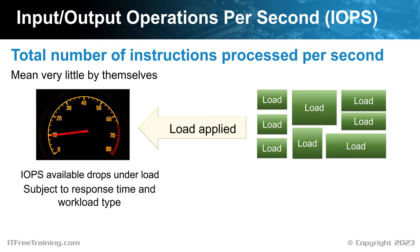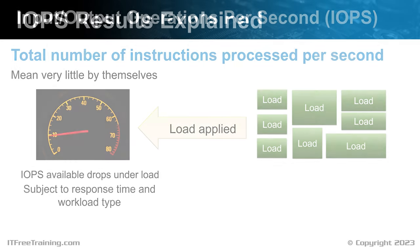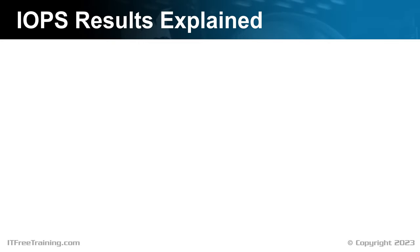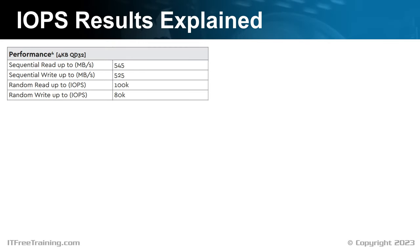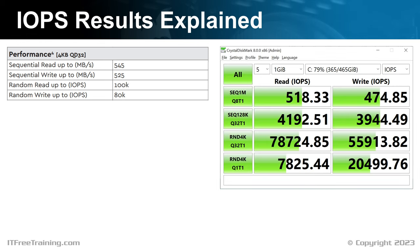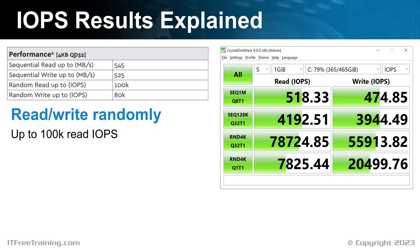Now that I have explained IOPS, let's go back to our previous example so we can better understand what IOPS are. With our solid state drive, the manufacturer gave us specifications and we also obtained specifications by running CrystalDiskMark. To understand these specifications, consider that data was read and written to the solid state drive randomly. The manufacturer indicated that IOPS for reading will reach about 100,000 — our results were 78,000. For write, the manufacturer gave 80,000 and our results were 55,000.